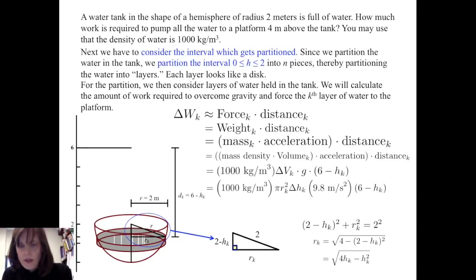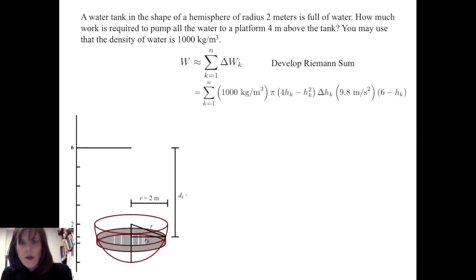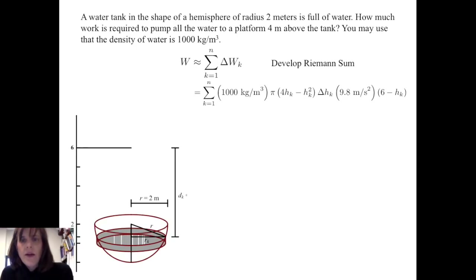We put this into our delta W sub k formula — it gets squared as the radius gets squared. We can simplify things so that the amount of work done to raise each layer of water to the platform forms a Riemann sum: the sum from k equals 1 to n of 1,000 kilograms per cubic meter times pi times (4h sub k minus h sub k squared) times delta h sub k times g times (6 minus h sub k).